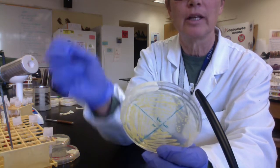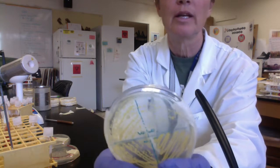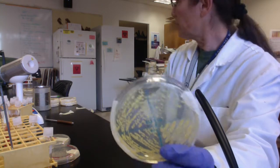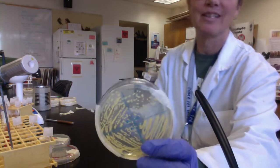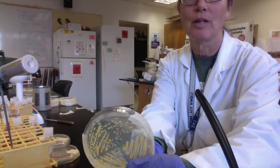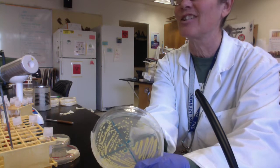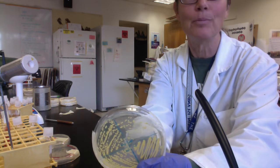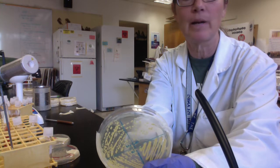Then in quadrant four again, they'd sterilize their loop and drag just some of the microbes into quadrant four. What's lovely is you'll see in quadrant four, they have isolated colonies. An isolated colony is a colony that's not touching any others. The beauty of them is an isolated colony represents a pure culture of bacteria.